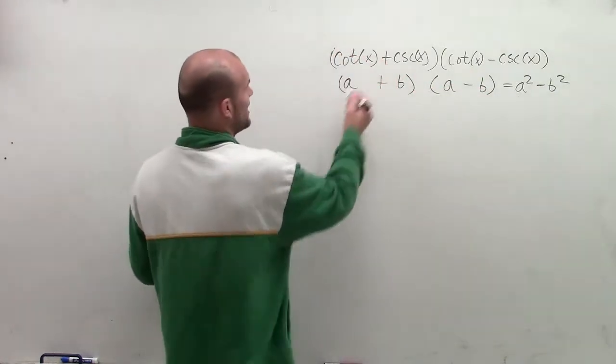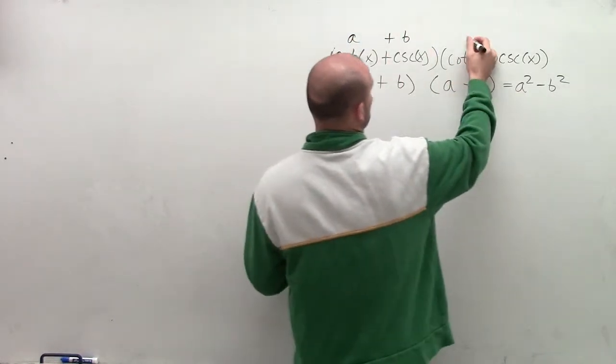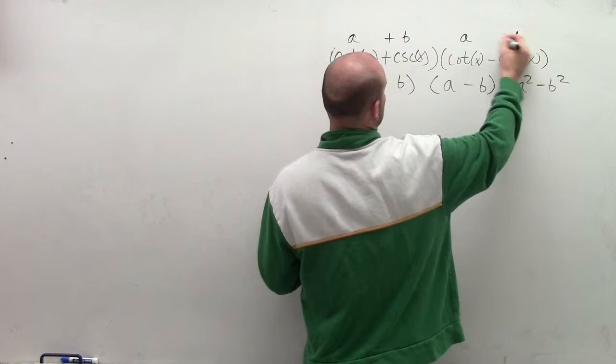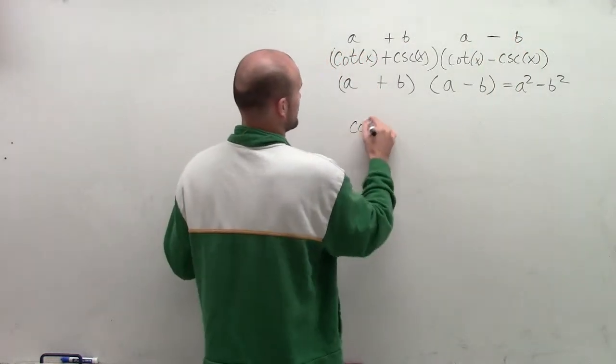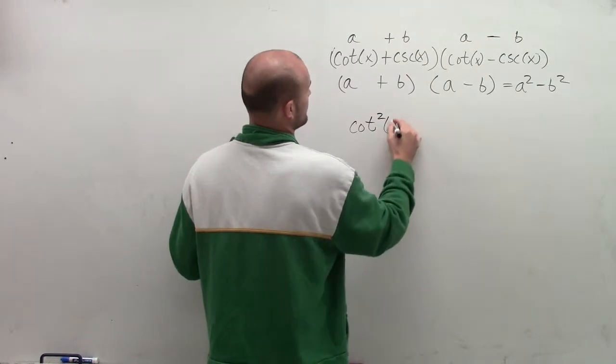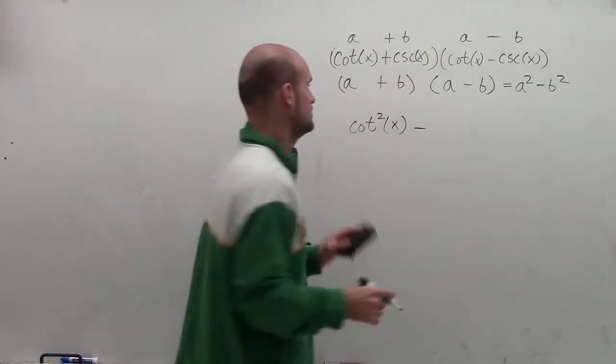So what I can do then is following that cotangent is A, cosecant is B, cotangent would be A, and cosecant is B. What I can do now is I can just rewrite that as cotangent squared of x minus cosecant squared of x.